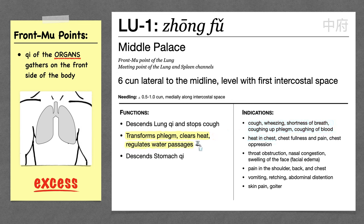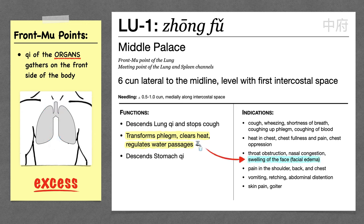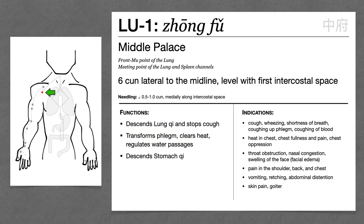Lung 1 regulates the water passages. If an excess condition is interfering with the descending function of the lung, the lung can no longer descend the fluids, and we may get acute swelling of the face. Lung 1 also has an effect on the stomach as well. Both the lung and the stomach have a downward action — the lung descends lung qi, and the stomach descends food, so a disharmony of one can affect the other.